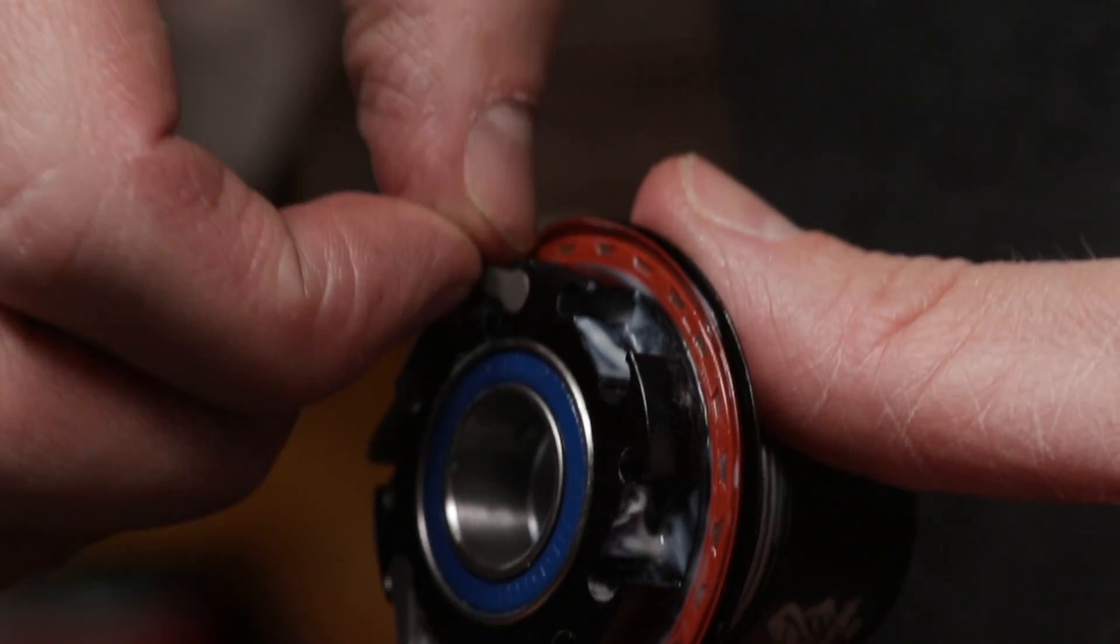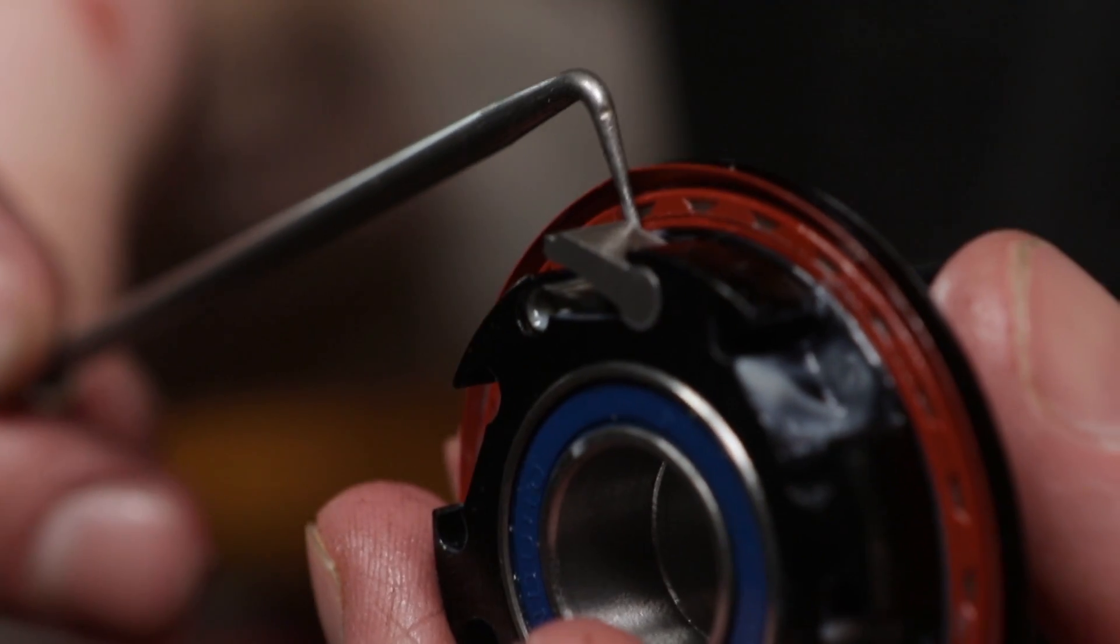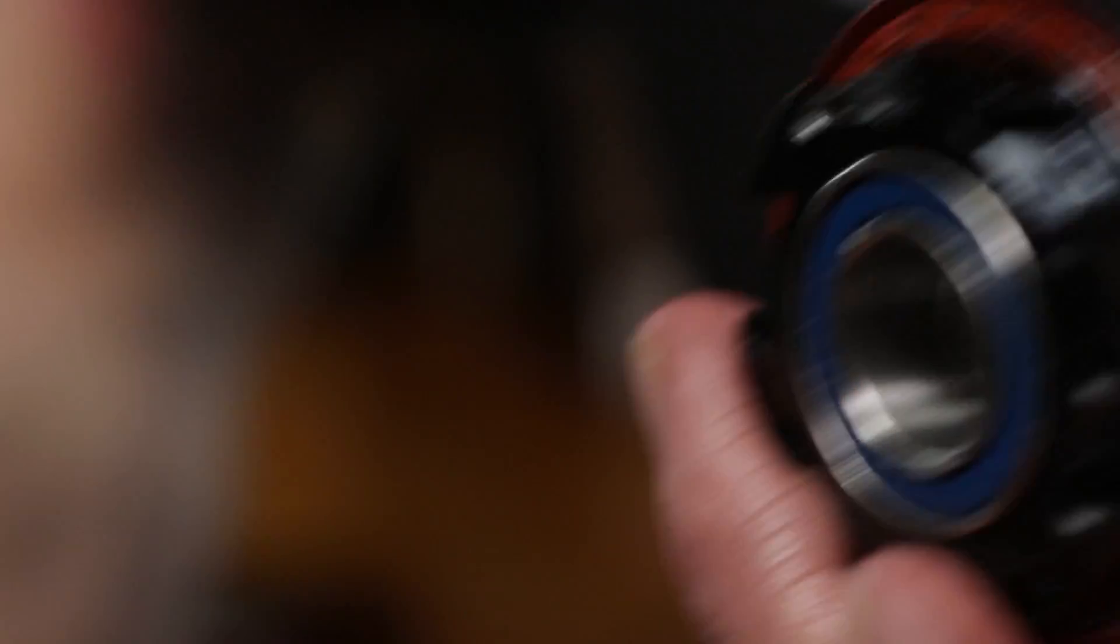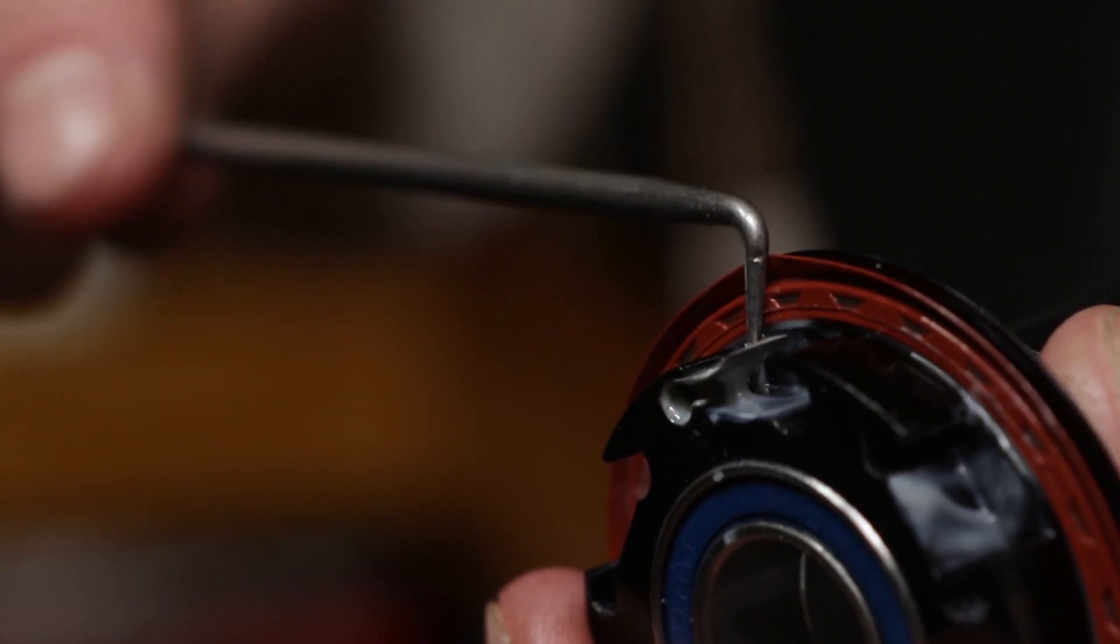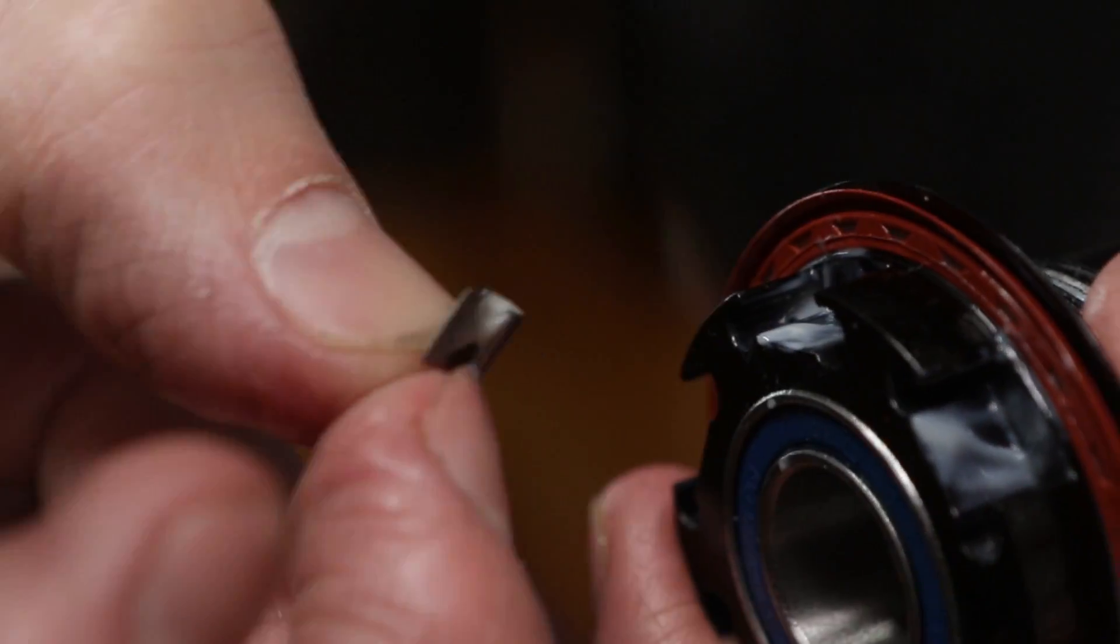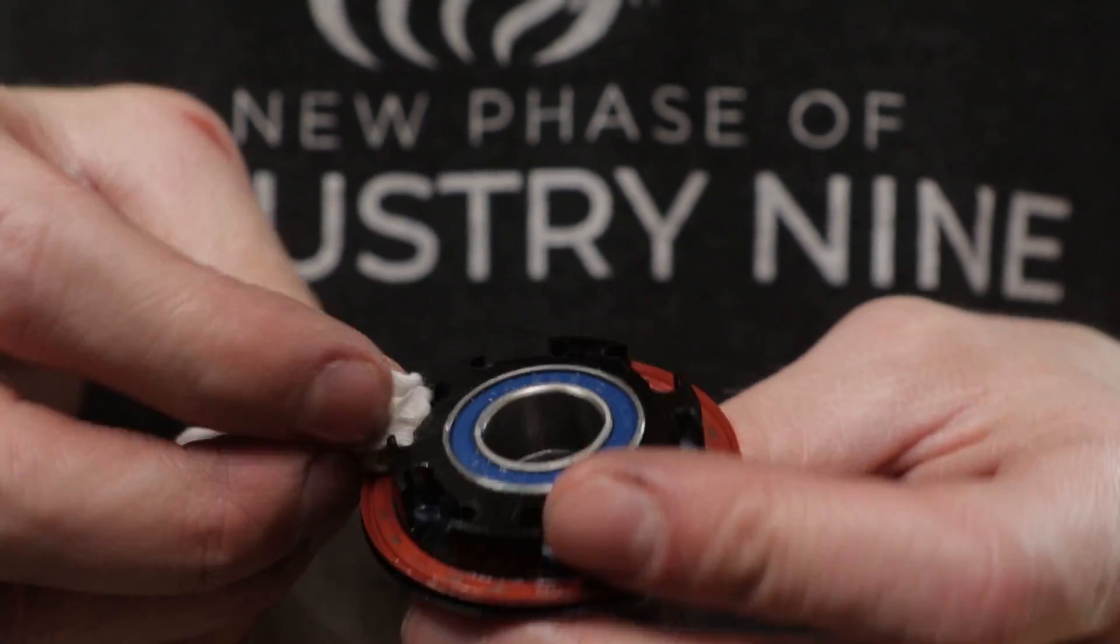Pawls and springs can be removed for cleaning. Take notice of the step on the pawl. You want to make sure they keep this orientation as you remove and reinstall them. Unseat the spring with a pick, then compress the loop to remove it from its seat. Use a rag to remove any excess grit and grease.